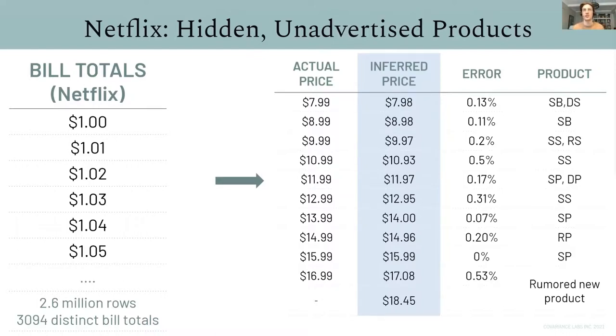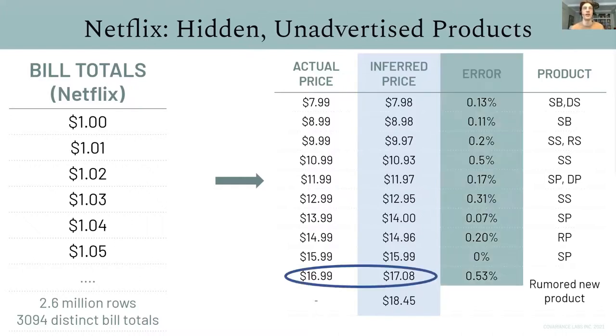In other words, we took millions of transactions total, spanning thousands of distinct bill totals. And from that, we inferred just 11 product prices with less than 0.6% error. So, the most interesting part of the inference is the $1,708 product price, or $1,699 in the first column. This was not a product listed on Netflix's website at the time of this inference.